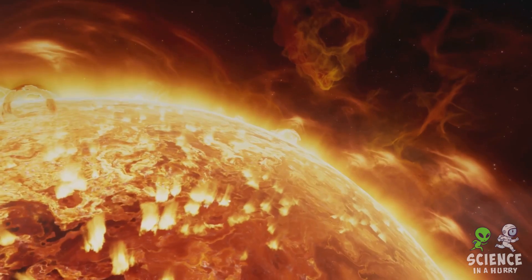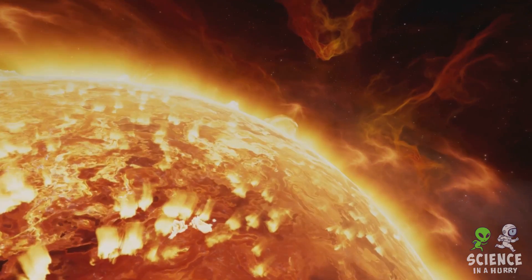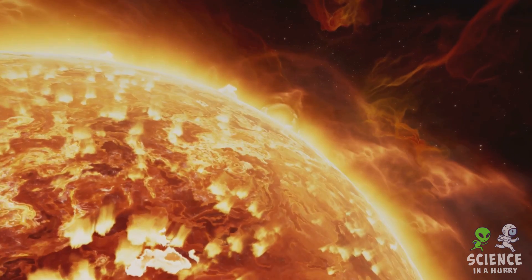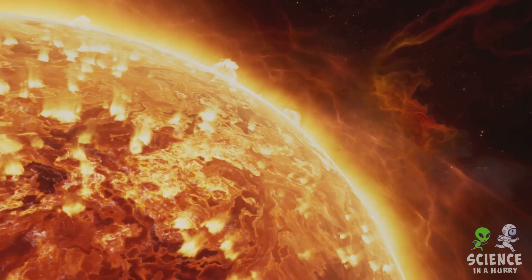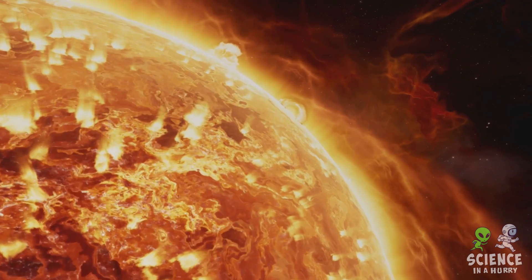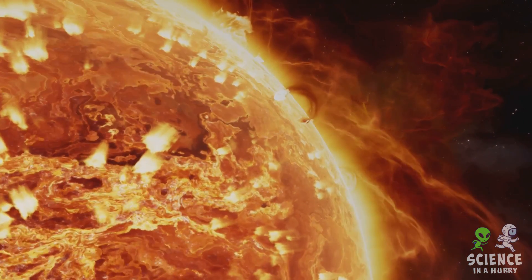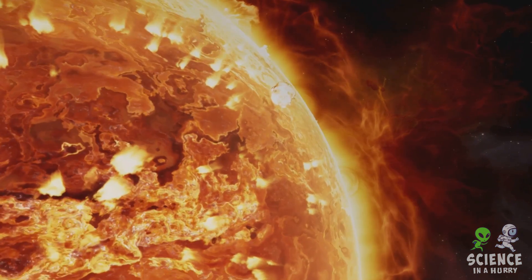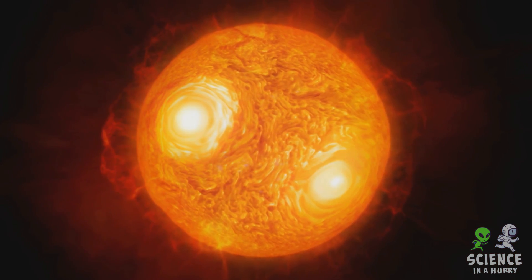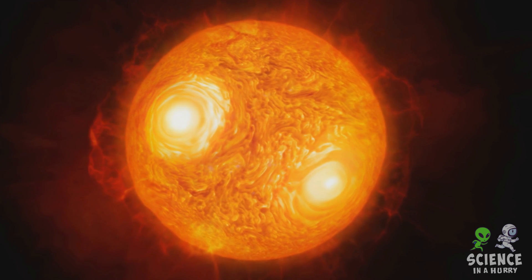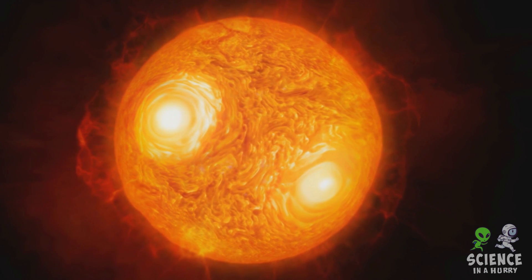It's renowned not only for its size and brilliance, but also for its place in the final stages of stellar evolution. Betelgeuse is estimated to be about 700 times the sun's diameter and over 20,000 times more luminous, yet it's relatively young at just a few million years old. However, in the life cycle of a star, Betelgeuse is considered elderly and is approaching the end of its life.